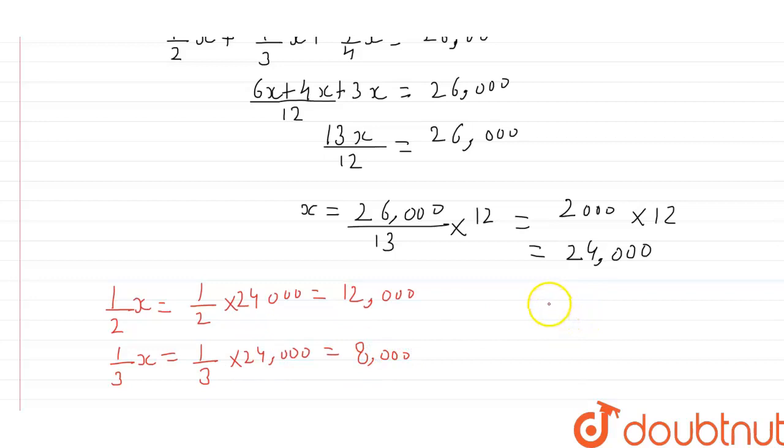And share of third person is 1 upon 4x, which will be equal to 1 upon 4 into 24,000, which will be equal to 6,000.